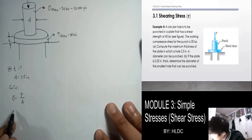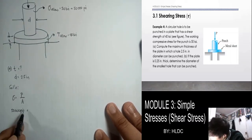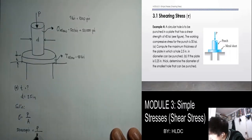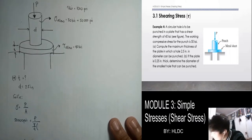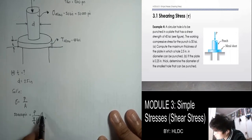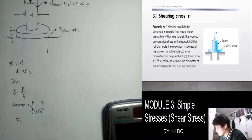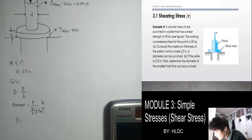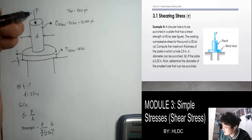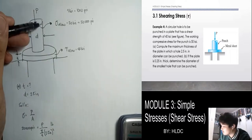Solving for the value of P: 50,000 times (pi/4) times (2.5)² gives P = 245,436.93 pounds. This is the maximum force we can apply without destroying the punch — it is at the limit of what the punch can handle.